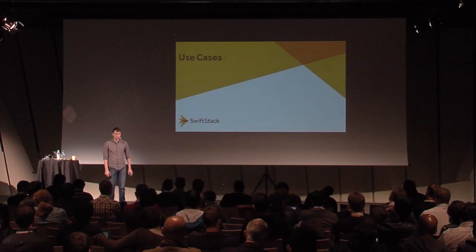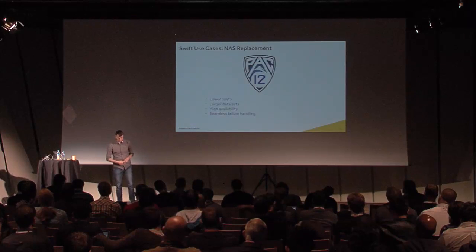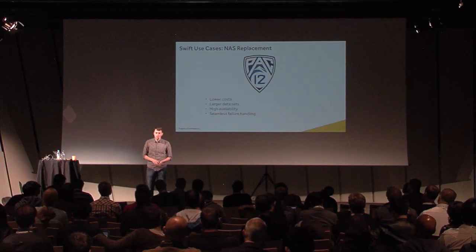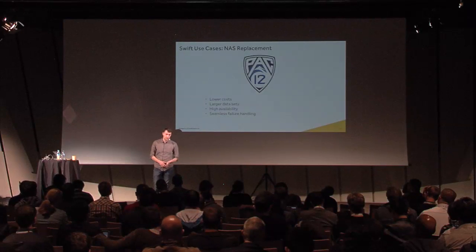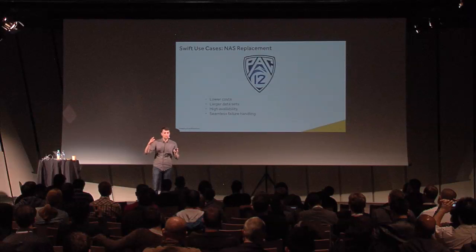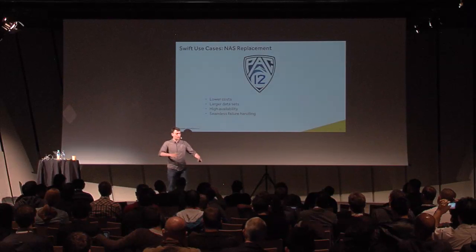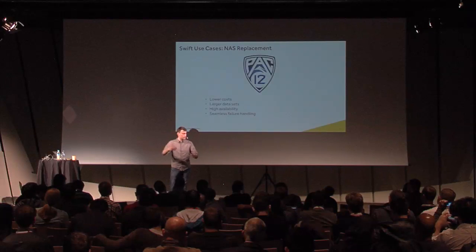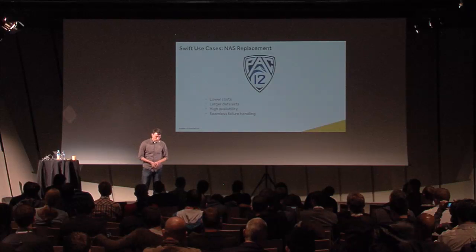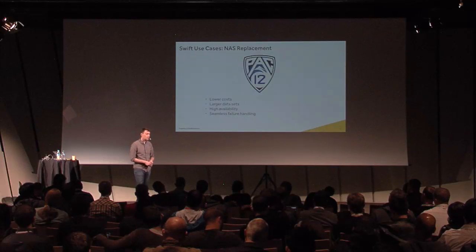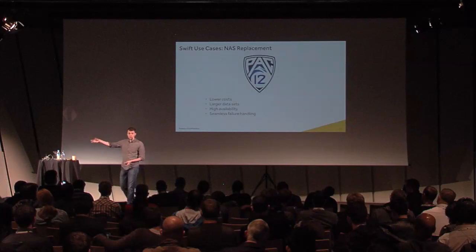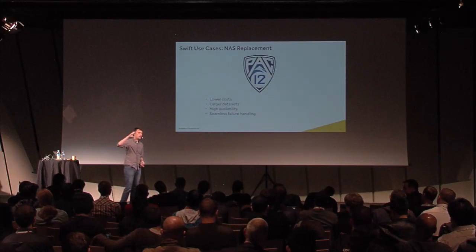Let's talk about some specific use cases. PAC-12, for those not familiar, is a sports broadcasting network on the west coast of the United States — a lot of college football and college sports. They record over 800 sporting events every year and need to store and broadcast that data. They were running out of space in their SAN, it was rather expensive, and they needed something cheaper and more scalable. They chose Swift to store their video, which meant they saved money moving from their SAN onto Swift for video storage.